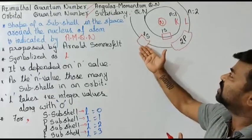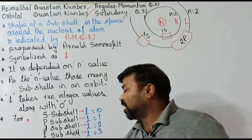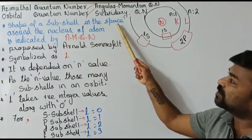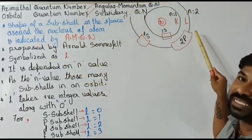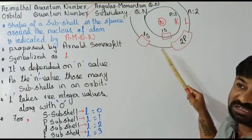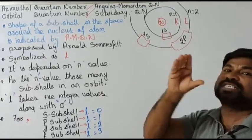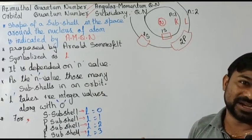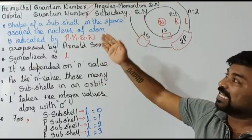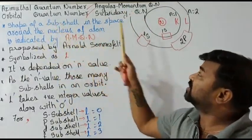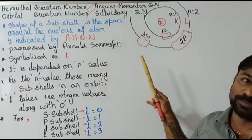The shape of these subshells is described by the azimuthal quantum number. The subshells are s, p, d, and f. The shape and position of each subshell around the nucleus is explained by Arnold Sommerfeld in his azimuthal quantum number. Arnold Sommerfeld proposed this quantum number — you are supposed to remember this.